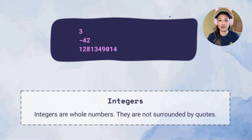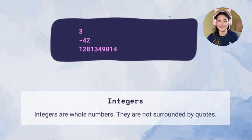If these numbers were surrounded by quotes, then they would become a string. So now we've got integers and strings, and these are two of our Python data types.